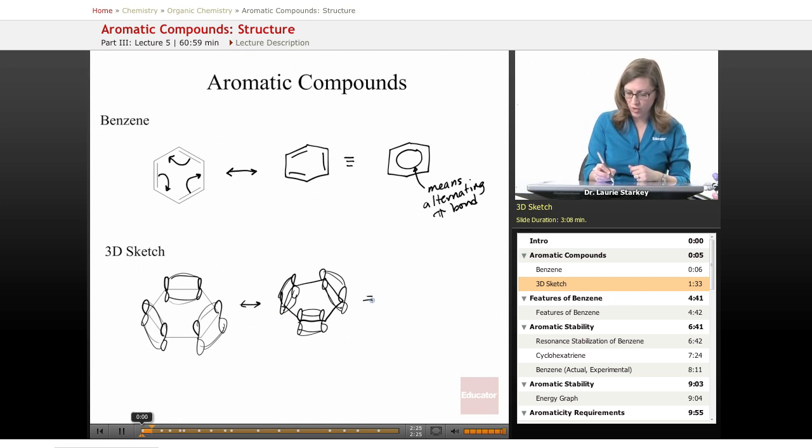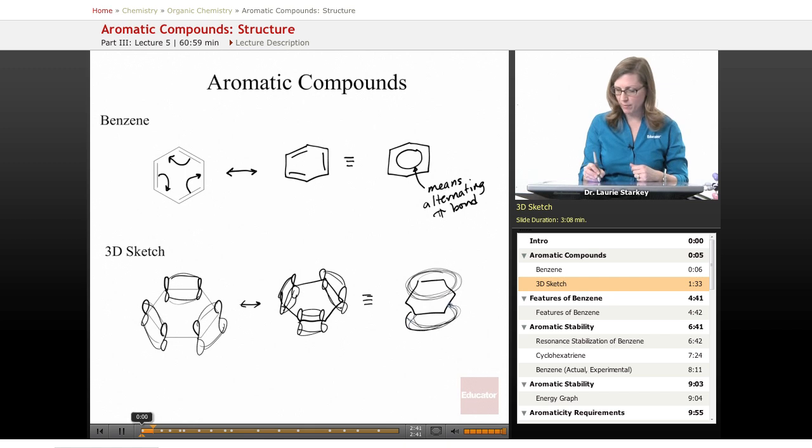So what you can draw, and that's what's nice about this structure that kind of looks like a hex nut—what's nice about that ring representation is it illustrates that in an aromatic compound like benzene, we have a cloud of electron density above and below the plane.